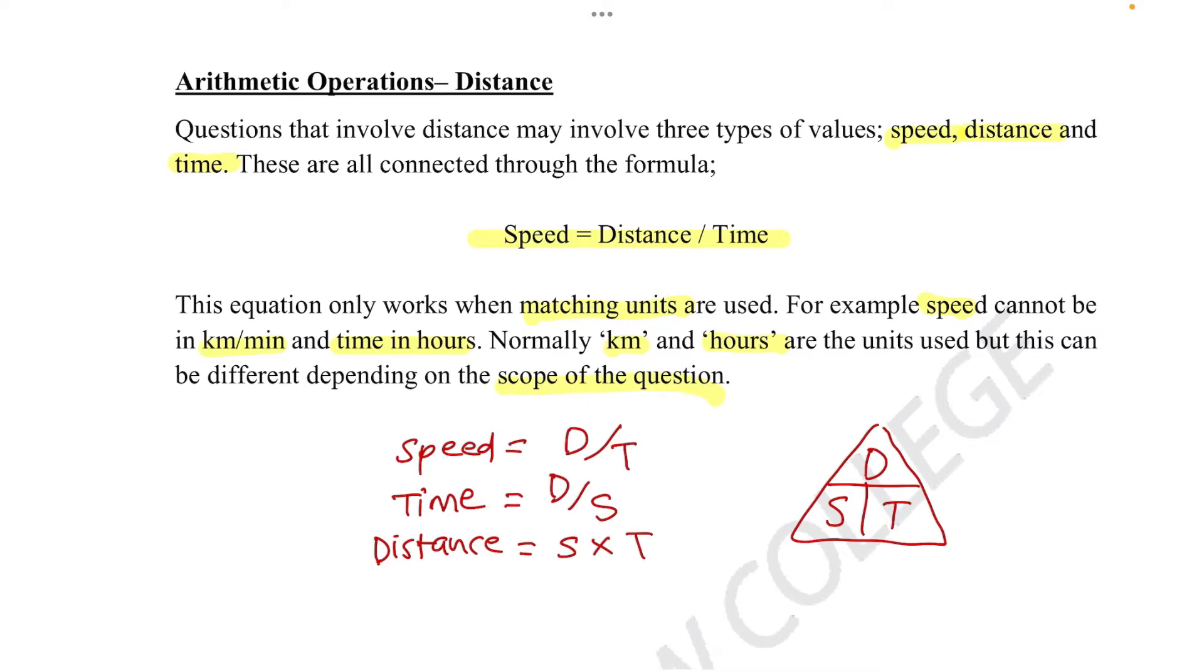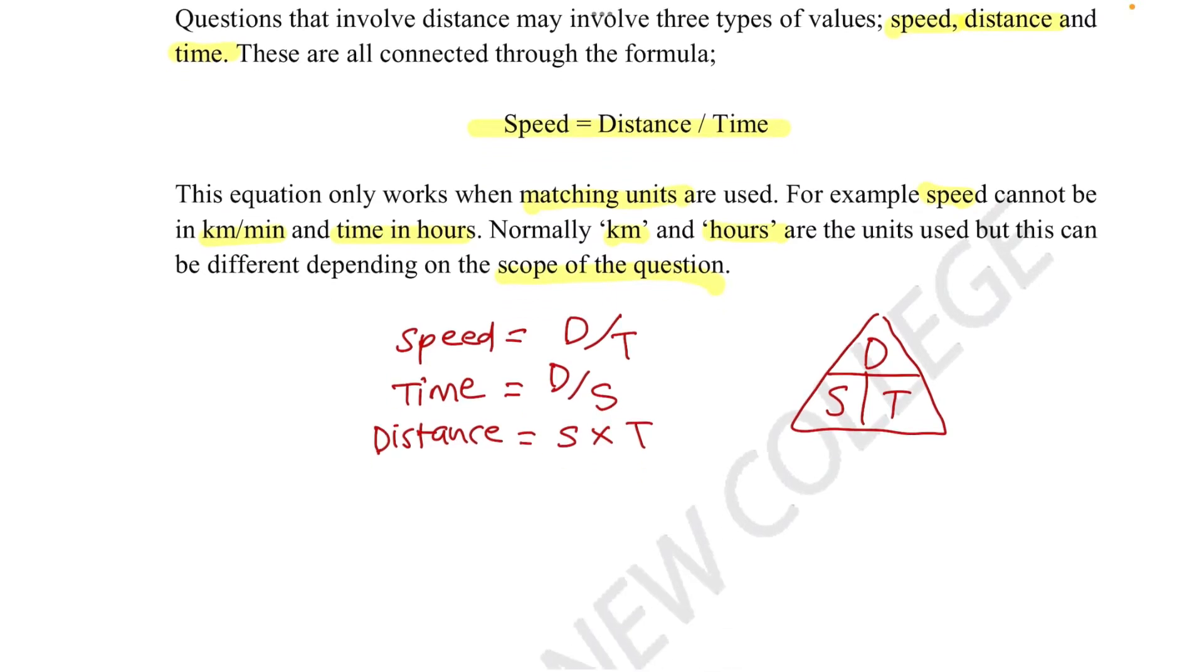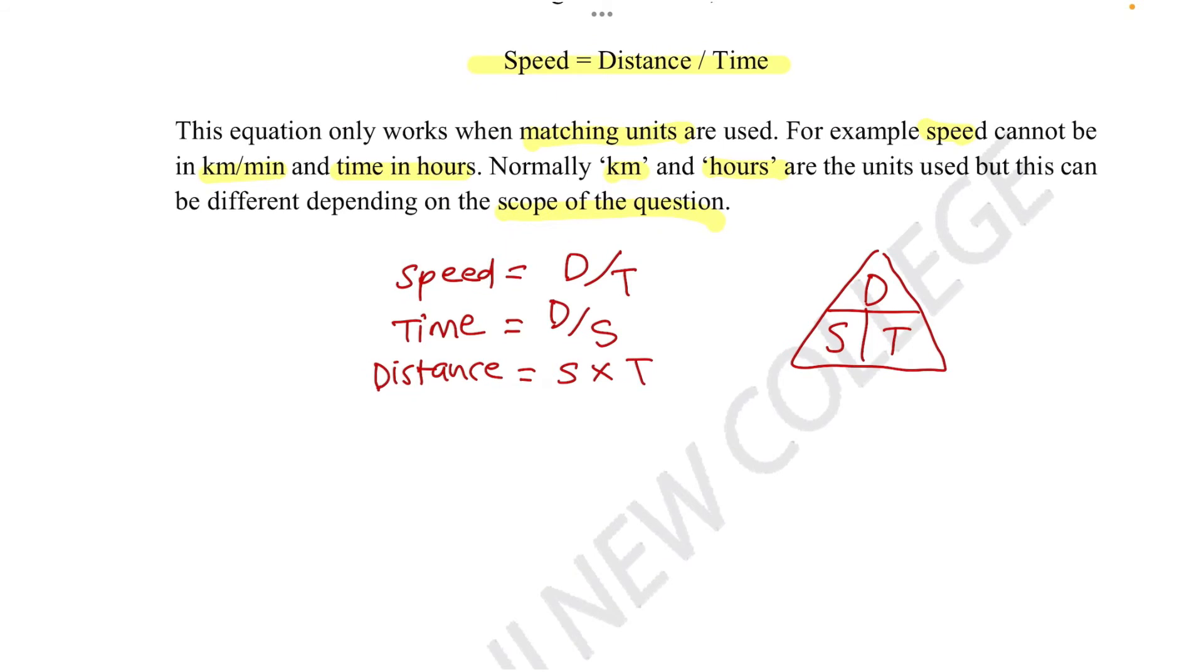So let's do a little example just to get the hang of it. Let's say there's a train and it moves at the speed of 80 kilometers an hour. It has traveled 240 kilometers. How long has the train been running for?